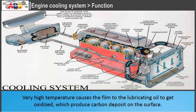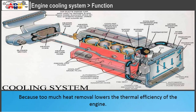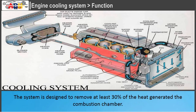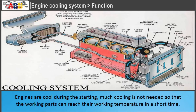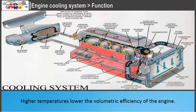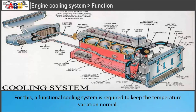Very high temperature causes the film of lubricating oil to get oxidized, which produces carbon deposits on the surface. This often results in piston seizure. Because too much heat removal lowers the thermal efficiency of the engine, the system is designed to remove at least 30% of the heat generated in the combustion chamber. A functional cooling system should remove heat at a fast rate when the engine is hot, and keep temperature variation normal to avoid distortion of engine components due to thermal stresses.